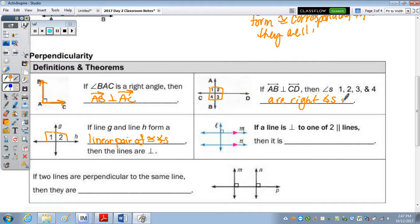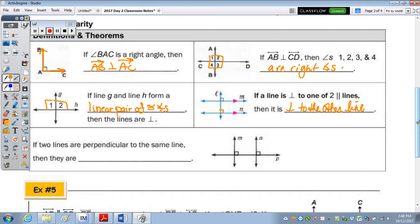And the next one, if a line is perpendicular to one of two parallel lines. So what it's saying is, if L is perpendicular to M, then what's true? And these two lines are parallel. There's another right angle formed where? Yes. So if two lines are parallel, and you have a line that's perpendicular to one of the two, it's also perpendicular to the other. So then it is perpendicular to the other line. And then last, if two lines are perpendicular to the same line, so these M and N are both perpendicular to P, then that means the lines are parallel to each other.